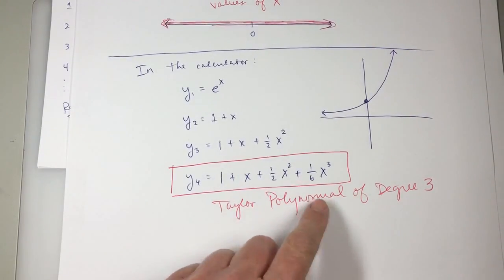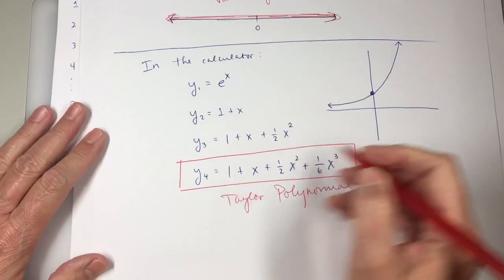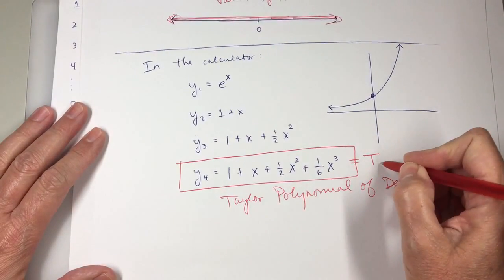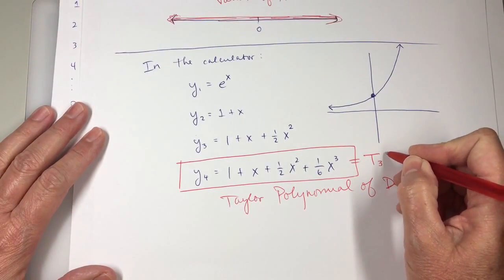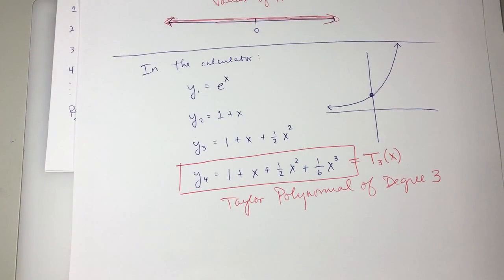And so this one being Taylor polynomial of degree three, what they do in section 11.11 is they denote this T sub three of X. 11.11 is applications of Taylor series.